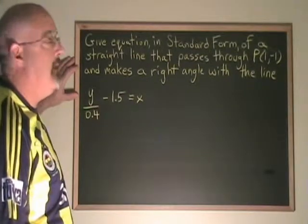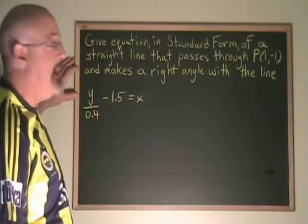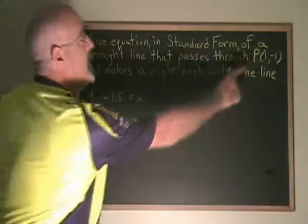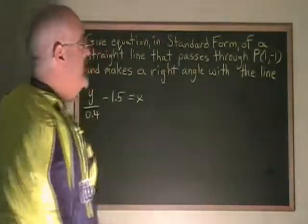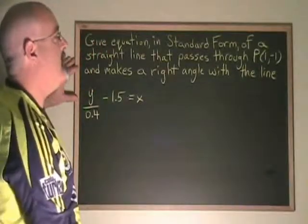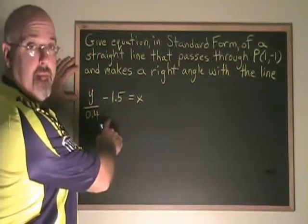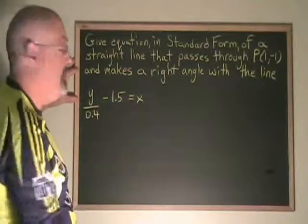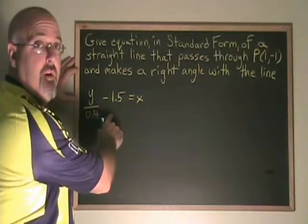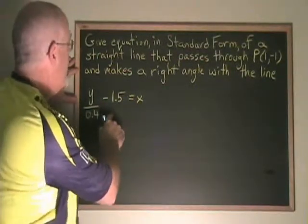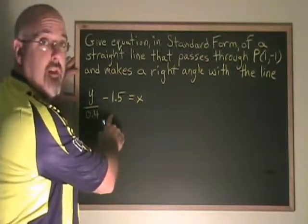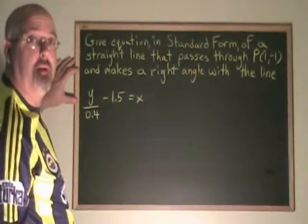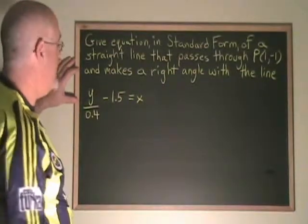Here we are asked to give the equation in standard form of a straight line that passes through (1, -1) and makes a right angle with this line. The first thing we have to do is find the slope of the line that we know. I'm going to isolate y and use y equals mx plus b, the slope-intercept form, to find that slope.